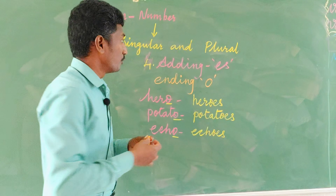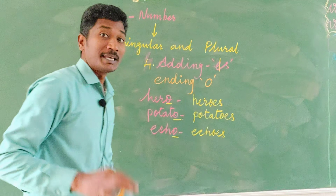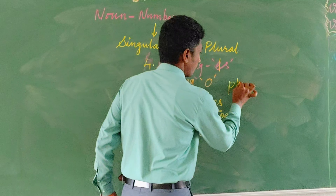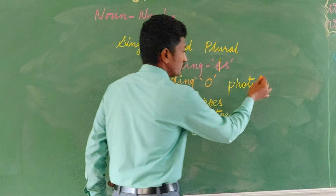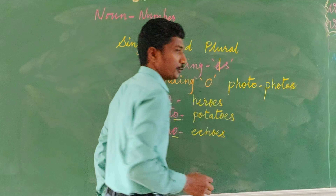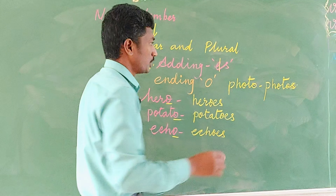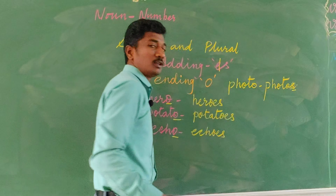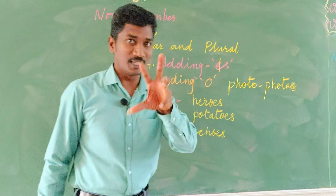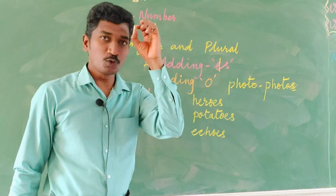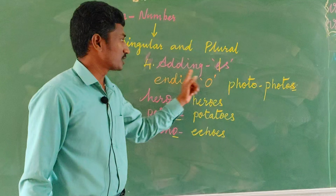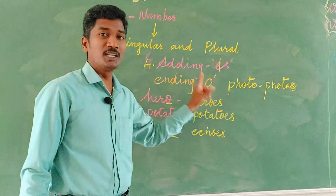It also has exceptions where we add just 's'. There are no rules behind these exceptions, but we have to understand them. For example, photo → photos, video → videos. So when ending in 'o' also, we have to add just 's' in these cases. These are words we have to know and keep in mind. We add 's' even though they are ending in 'o'.